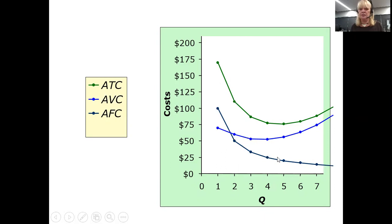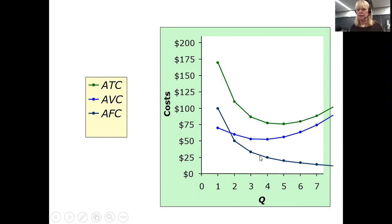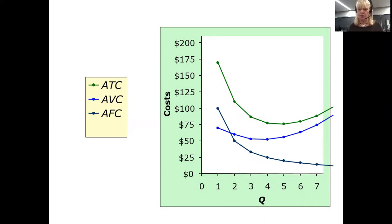All three of these costs are calculated by dividing by quantity: total cost divided by quantity, variable cost divided by quantity, fixed cost divided by quantity. If this is confusing, it might be a good idea to go back and review that last lecture before we go forward.